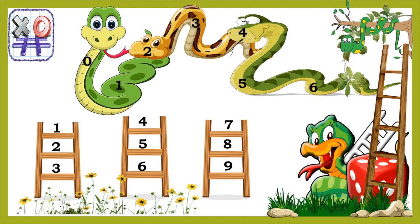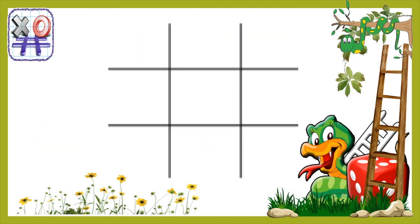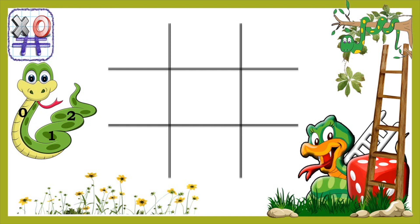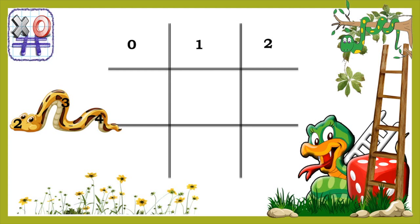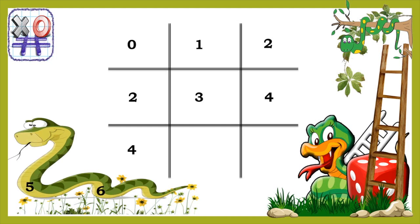Here we have three snakes and three ladders with numbers on them. Notice how the snakes are overlapping each other. The first snake has numbers 0, 1 and 2. The second snake has numbers 2, 3 and 4. The third snake has numbers 4, 5 and 6. And the ladders have numbers from 1 to 9. Now we are going to fill these numbers in tic-tac-toe: numbers of the first snake 0, 1 and 2 in the first row; the second snake 2, 3 and 4 in the second row; the third snake 4, 5 and 6 in the third row.